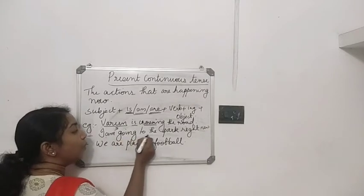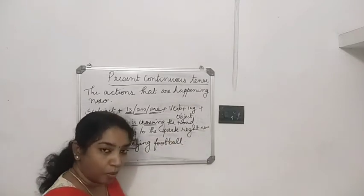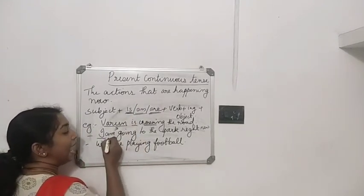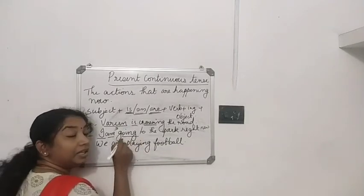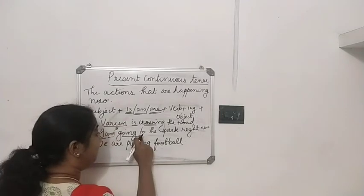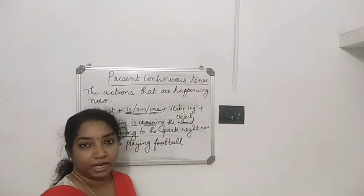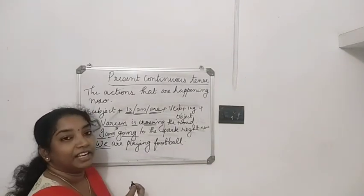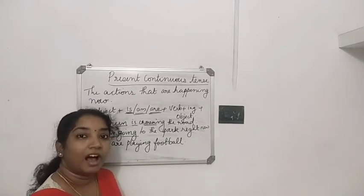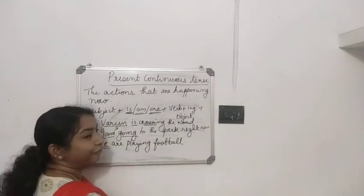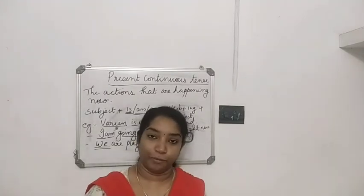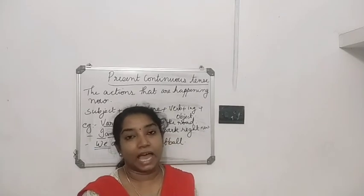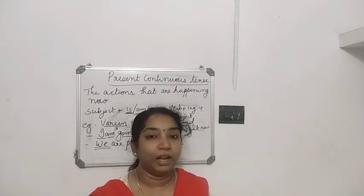Next sentence: 'I am going to the park right now.' 'Now' means at present. So we have to use 'I am,' with the ING form of the verb: I am going to the park right now. Next sentence: 'We are playing football.' 'We' — so we have to use 'are.' We are playing football. So you have to use subject plus is, am, or are, plus ING form of the verb.